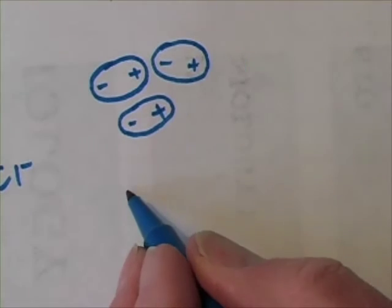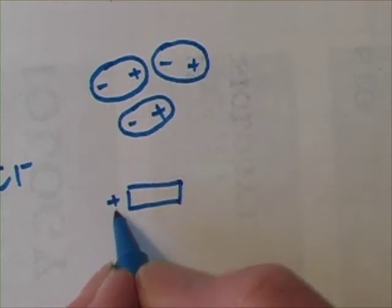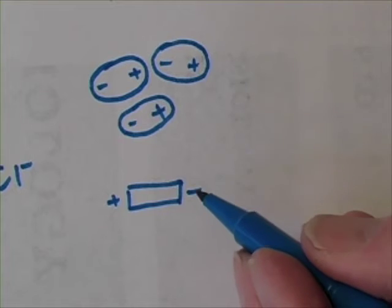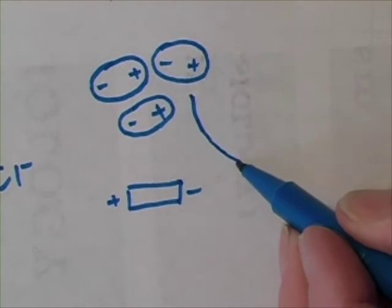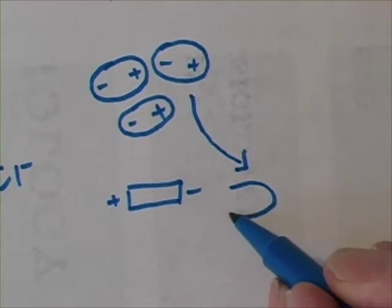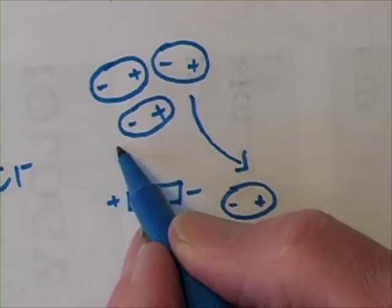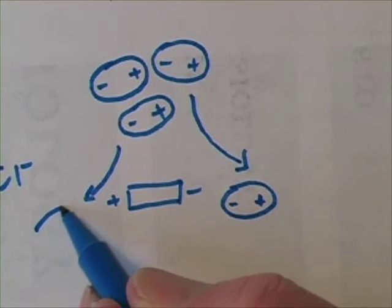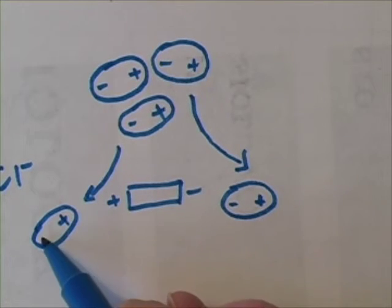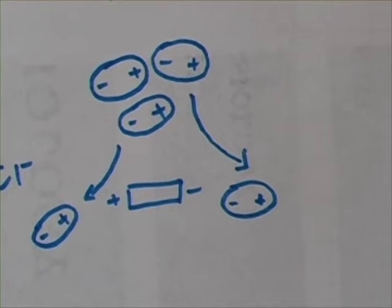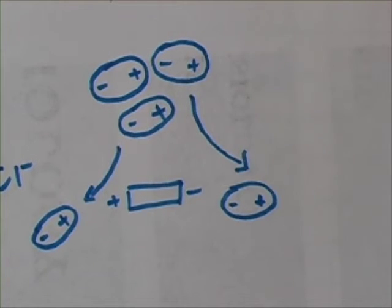Now again, if you add the polar compounds to water, let's say you add sugar to water. What happens? Stir it a little bit and the sugar dissolves. Well, the negative end of the water molecule repels the negative end of the polar sugar molecule. The positive end of the water molecule repels the positive end of the polar sugar molecule. And lo and behold, the sugar has dissolved in water.